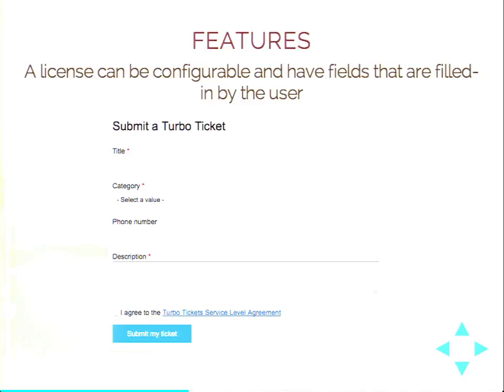A license can be configurable, which means that it has some fields that the user must enter before checkout is complete. We provide two ways to do that: either you install Inline Entity Form and get those fields on the add-to-cart form — like in the TurboTicket example where we ask for title, phone number, and description — or we provide a checkout pane that does the same thing in the middle of checkout. This allows us to gather the information we need, such as ticket information or platform location.